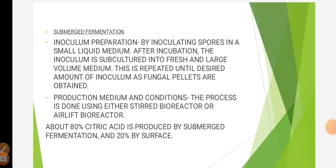The next process is submerged fermentation. Around 80% of the world's supply of citric acid is produced by submerged processes. This is the most preferred method because it is highly efficient and has easy automation. For submerged fermentation, two types of bioreactors are in use: stirred tanks and aerated towers.